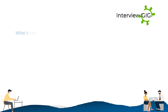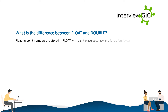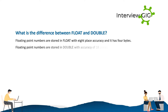What is the difference between float and double? Floating point numbers are stored in float with 8-place accuracy and it has 4 bytes. Floating point numbers are stored in double with accuracy of 18 places and it has 8 bytes.